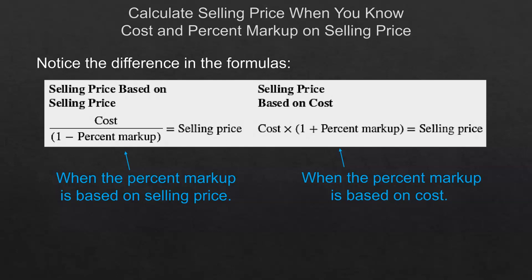Notice that finding the selling price based on selling price versus finding it based on cost works differently. For selling price based on selling price, you take the cost and divide by 1 minus the percent markup. For selling price based on cost, you take the cost times 1 plus the percent markup to get your selling price. It might help to make note cards of these formulas. The core equation is: S equals C plus the markup amount.